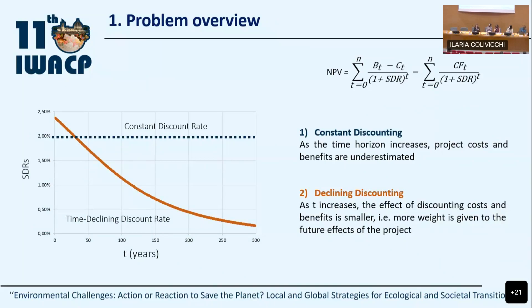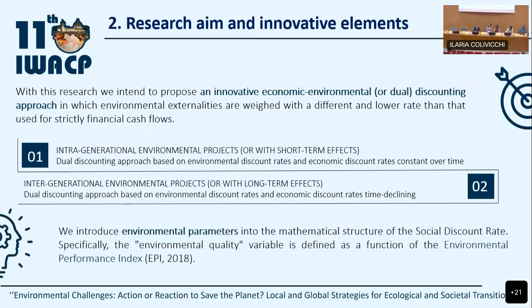In some cases, also declining discount rates are implemented and proposed. With a time-declining structure of the discount rate, as time increases, the effect of discounting on costs and benefits is smaller, meaning more weight is given to the future costs and benefits of the project. However, from our point of view, even the use of a declining structure doesn't fully solve the problem related to discounting.